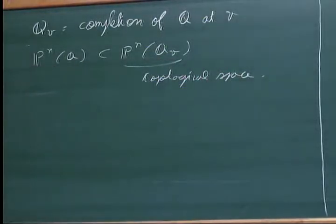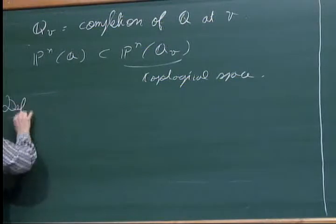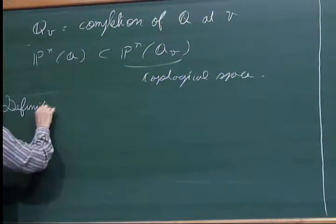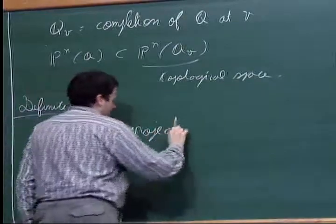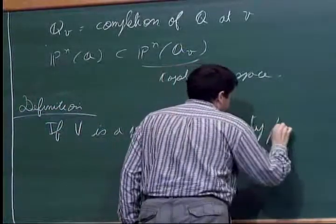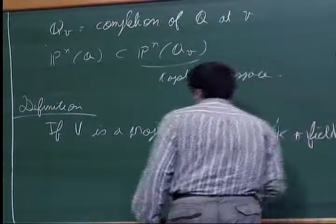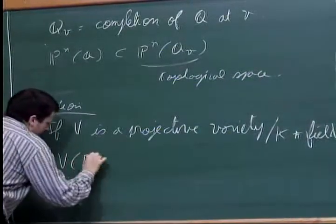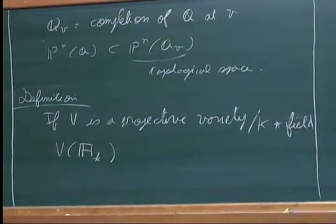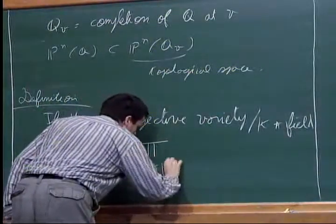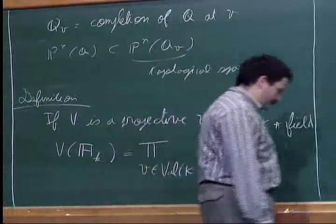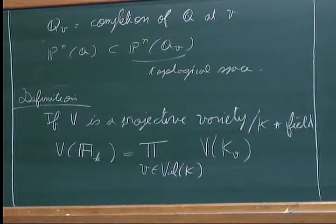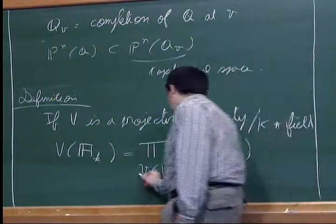More generally, it's more interesting to consider the adelic space associated to P^n. Let me give a partial definition: if V is a projective variety over a number field, then I may define the set of adelic points of V as a product over all places of the number field K of the points of V on the completion of K at V. This is a topological space.